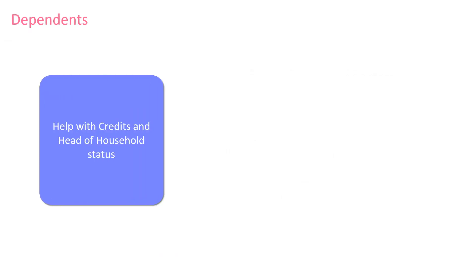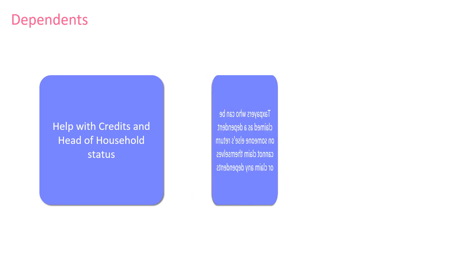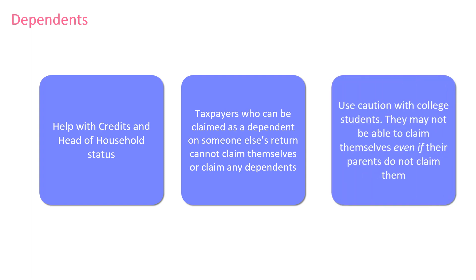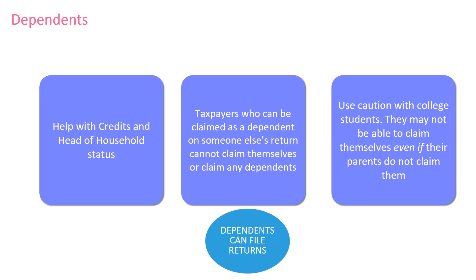Dependency is important for determining eligibility for a variety of different credits, as well as the head of household filing status. If the taxpayer is someone else's dependent, they cannot claim themselves and they can't claim any dependents of their own. So you want to be cautious with college students and make sure they are not a dependent of their parents before claiming themselves on their tax return. A taxpayer claimed as a dependent may still file a return to receive a refund of withholdings, or in some cases they might have a balance too.